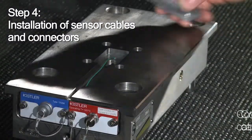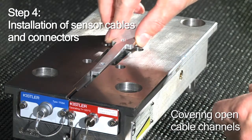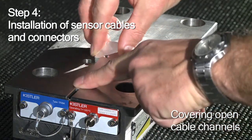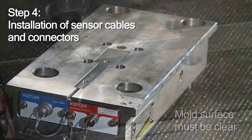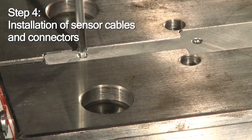In some cases your mold has open cable channels. To prevent damage you should protect them using a metal cover. Make sure it's a tight fit and the mold surface is clear.